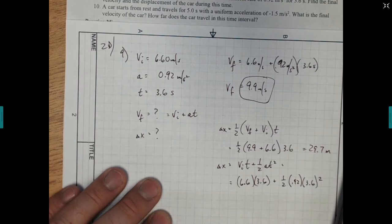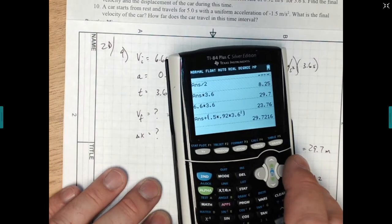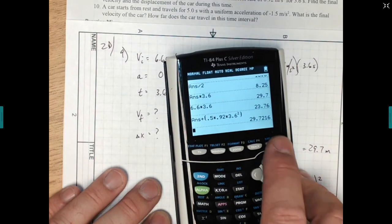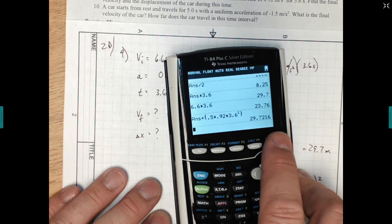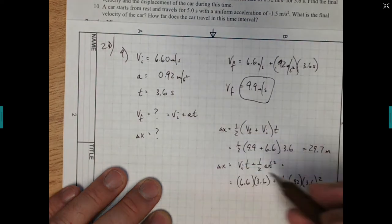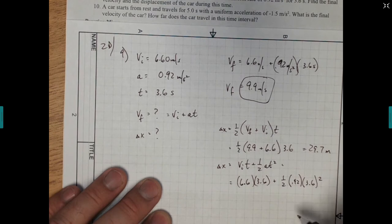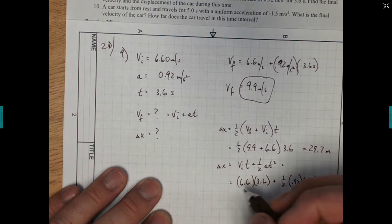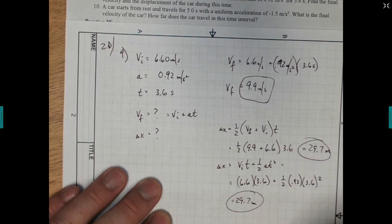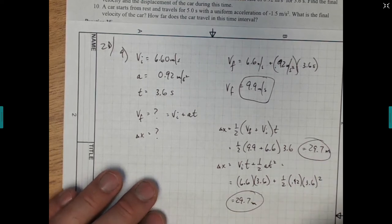We're going to add that to 1 half times the 0.92 for acceleration times the 3.6 seconds squared. So first we have 6.6 times 3.6. And then we're going to add that to 0.5 times 0.92 times 3.6 squared. And look at that. We get 29.7. Now it's off a little bit. There's that 0.0216 extra. Remember, we rounded off our 9.9 a little bit. And so that's where things end up being just a little bit different. But 29.7 meters, exactly the same thing both times. So it really doesn't matter which one we use.